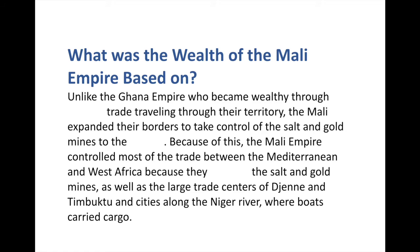All that work building mosques and training imams required money, and the Mali Empire was really, really wealthy. Their approach was a bit different from the Ghana Empire. The Ghana Empire became wealthy mainly by taxing trade passing through their territory — salt and gold traders would pass through and they'd take a cut. The Mali Empire decided to get rid of the middleman and just expand their borders to take over the gold mines and the salt mines directly.